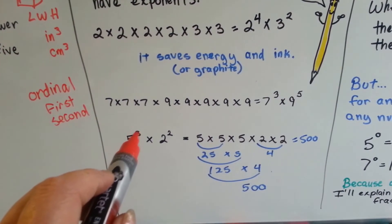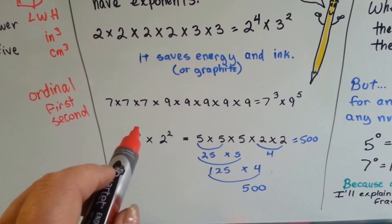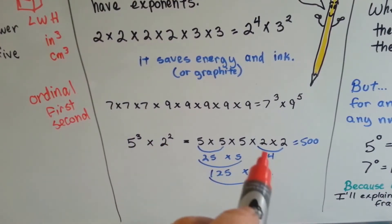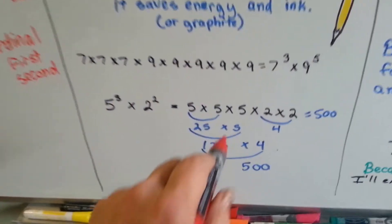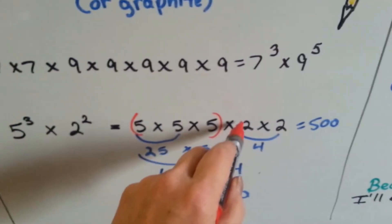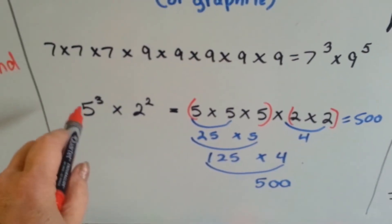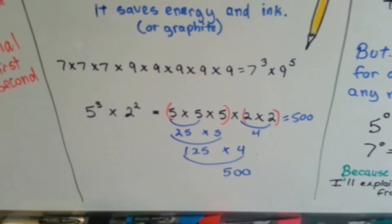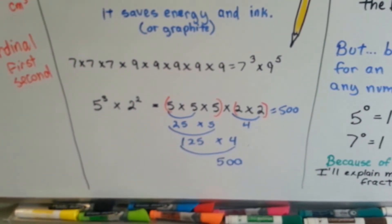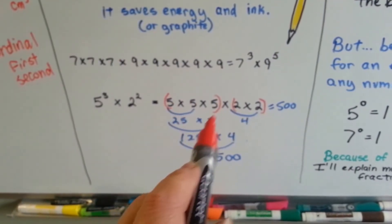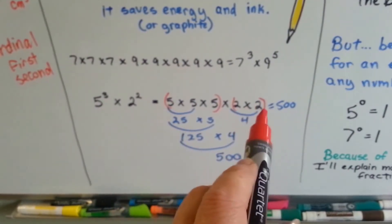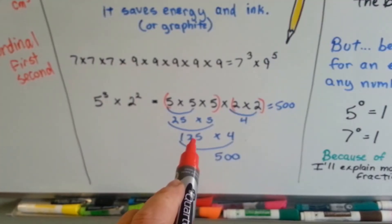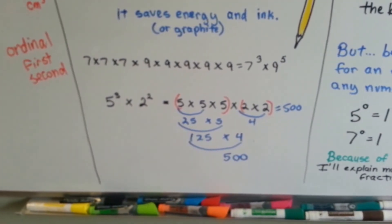If we have a 5 with a 3 up here, it's 5 to the 3rd power, which means 5 times 5 times 5. And we're multiplying it by 2 times 2. We would solve 5 to the 3rd power first, then solve 2 to the 2nd power, then multiply them — because we always do exponents first. So 5 times 5 is 25, times 5 is 125. 2 times 2 is 4. Then 125 times 4: 400 plus another 100 is 500.